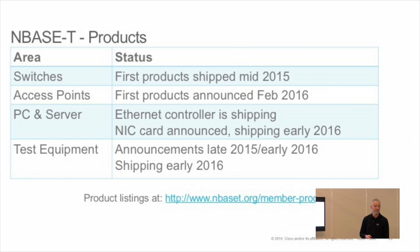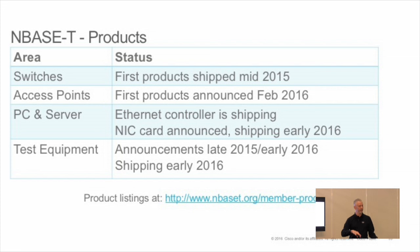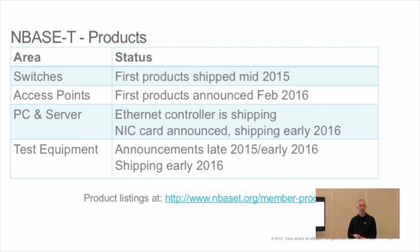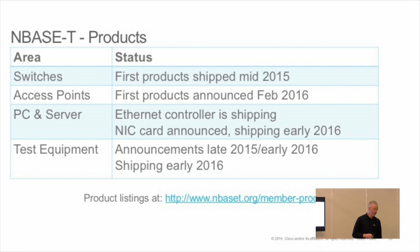In terms of what's shipping: switches — the first products were shipping mid-2015. Access points: the AP3800 has been announced — you can see it on the floor of World of Solutions. PCs and servers: the Ethernet controller shipping from Intel is the X550. There's a NIC card announced from ASUS — I think it's shipping early 2016, but go look at ASUS.